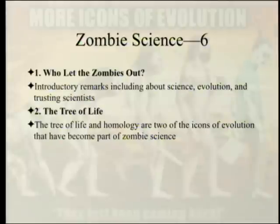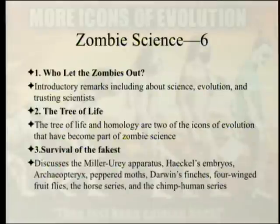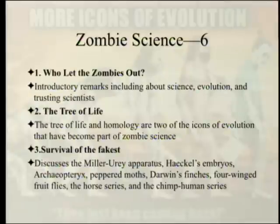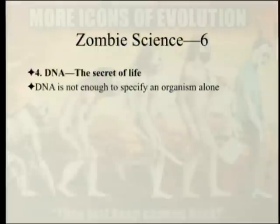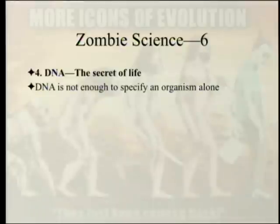The Tree of Life and Homology are two icons of evolution that have become part of zombie science. He then covers the other eight icons from the first book — the Miller-Urey apparatus, Haeckel's Embryos, Archaeopteryx, Peppered Moths, Darwin's Finches, Four-winged Fruit Flies, the Horse Series, and the Chimp-Human Series — noting they all appear in textbooks discussed fairly uncritically. He also introduces DNA as a new icon, noting it has specificity but is insufficient alone to specify an organism, leading into epigenetics and positional information.